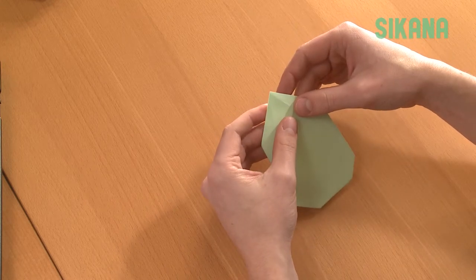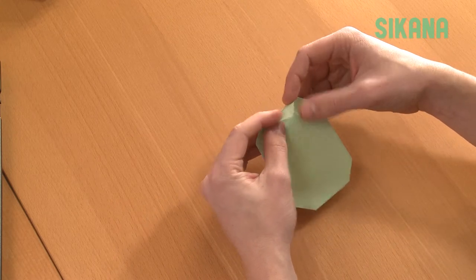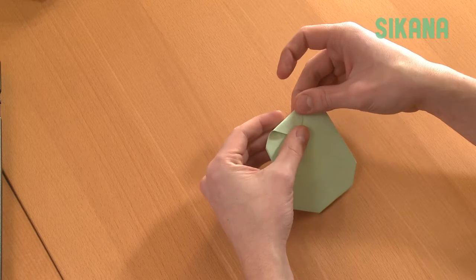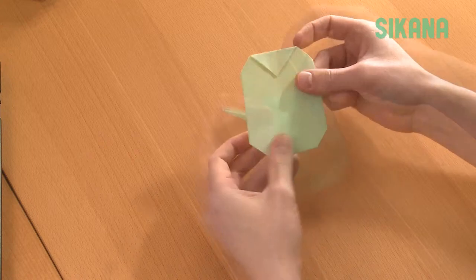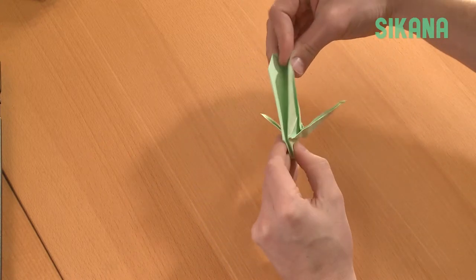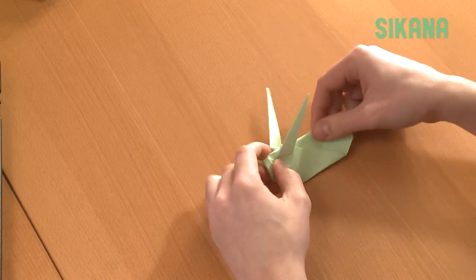Now, fold the other tip down to this point. Fold the origami in half. It should look like this.